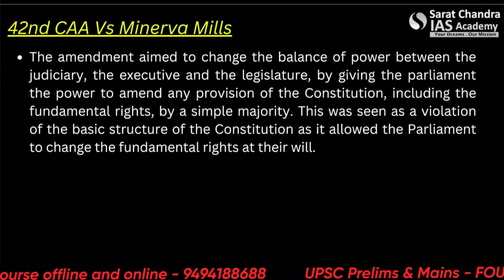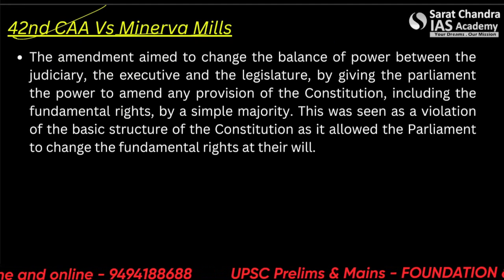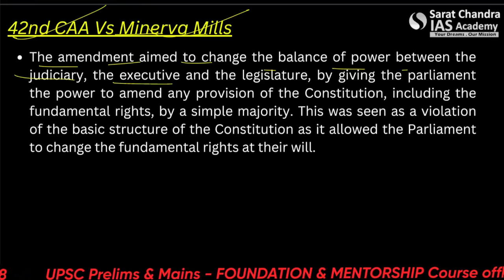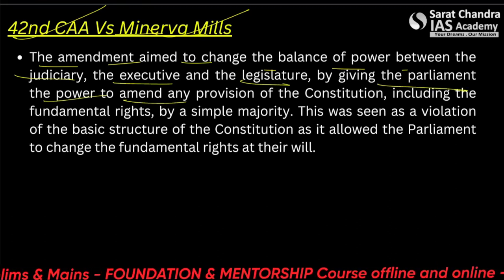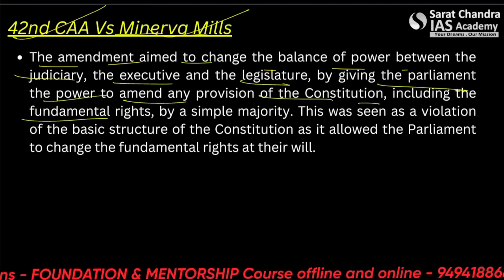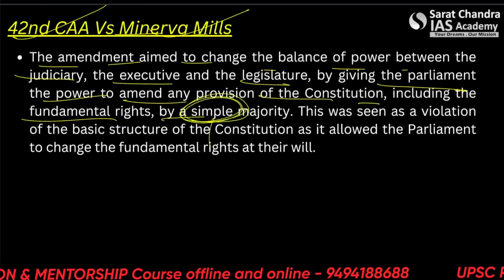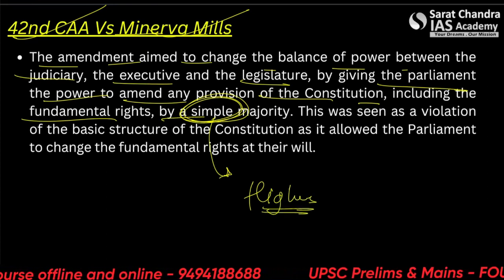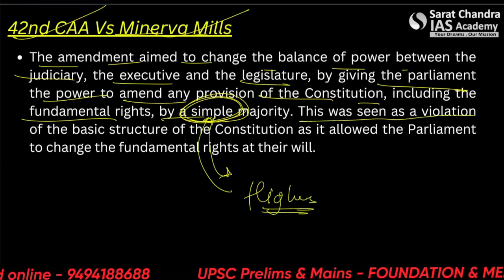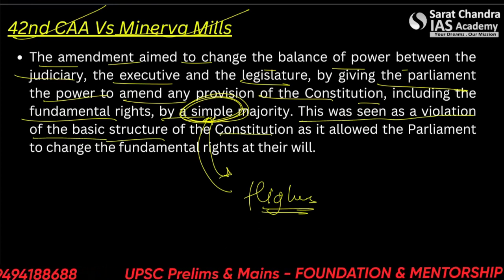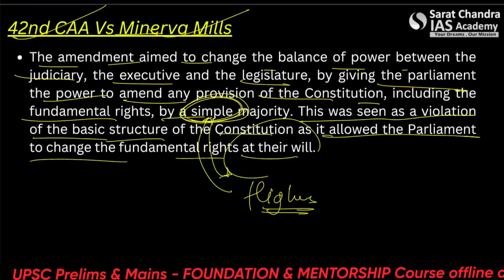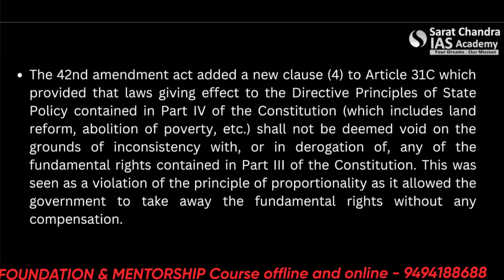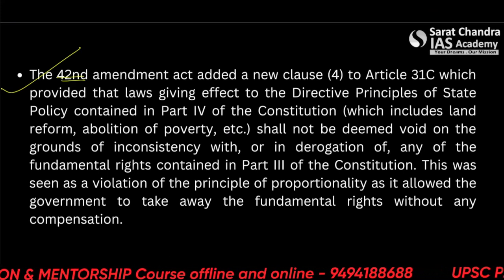Then came the 42nd Constitutional Amendment Act — the mini constitution — versus the Minerva Mills case. The amendment aimed to change the balance of power between the judiciary and the legislature by giving parliament the power to amend any provision of the constitution, including fundamental rights, by a simple majority. Earlier it required a higher majority. This was seen as a violation of the basic structure of the constitution, as it allowed parliament to change the fundamental rights at their will.